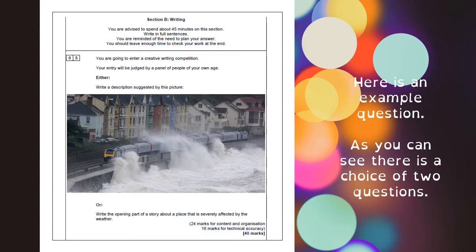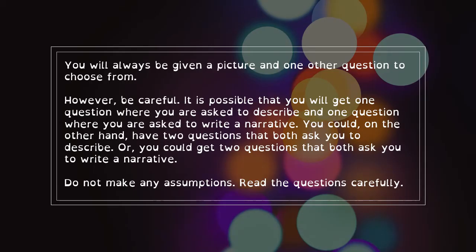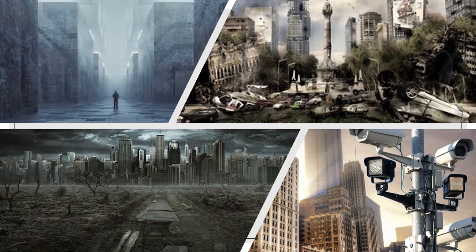You also know what this looks like — we've been through this before. Section B, writing. You get a choice of tasks, either a description or a narrative. It might be that the description is based on the picture that you're given, it might be the narrative — you just have to read carefully. Don't make assumptions; read the questions carefully. Here are some pictures of the dystopian genre like we discussed in our starter today. We might come back to some of these images later on this week and start writing our own dystopian fiction.